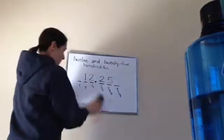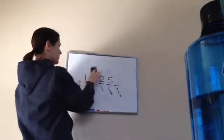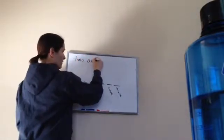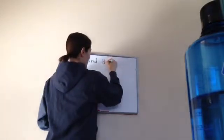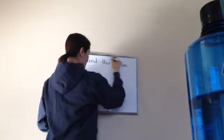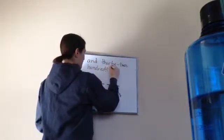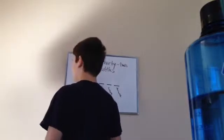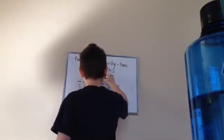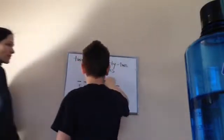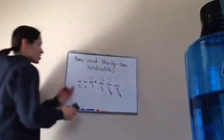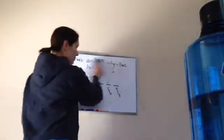Now I'm gonna write something up here and you're gonna come up and put the number in. Come on up. See how you figure out how to do it — two and thirty-two hundredths. Perfect — thirty-two. Good job! You did it exactly right: two and thirty-two hundredths.